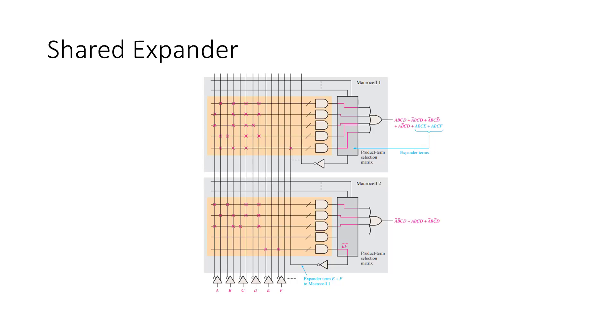In this example, we're using two macro cells to generate two SOP expressions. Macro cell 2 generates the product term NOT E and NOT F and feeds it through an inverter back into the array as E or F, where it is used by macro cell 1 to generate its expression.